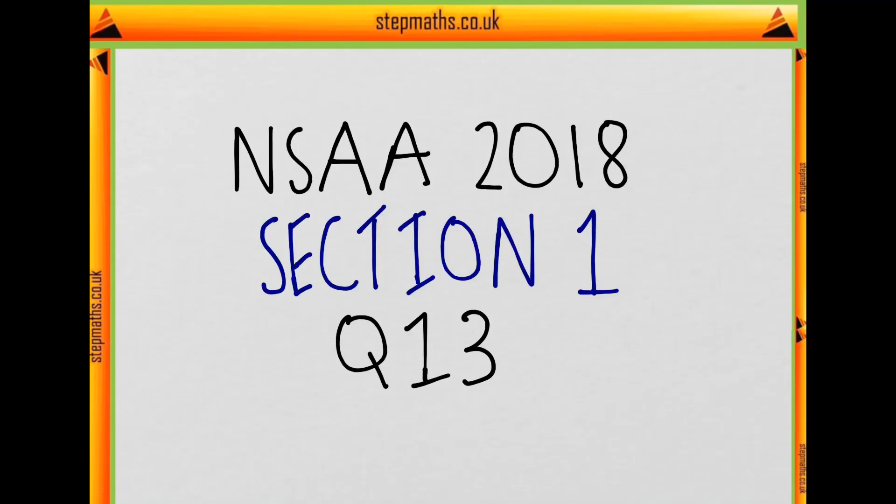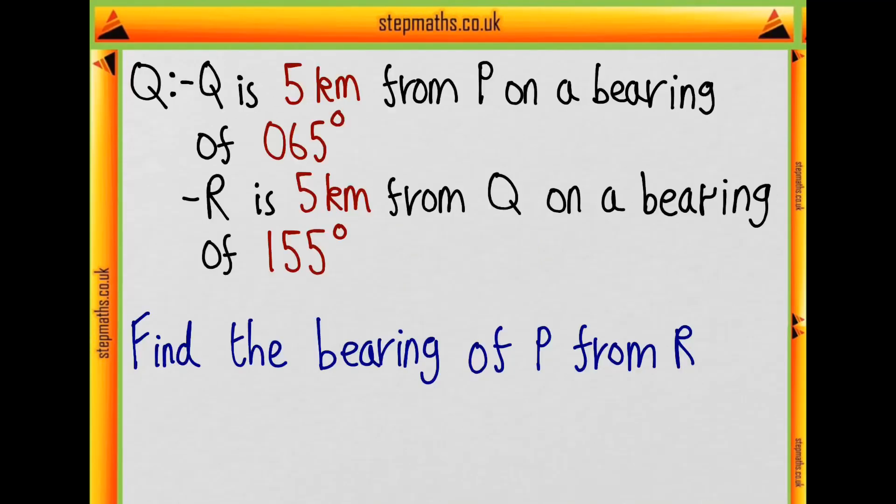This is question 13 from section 1 of the 2018 ENTER paper. In this question we're given a point Q, told it's five kilometers from P on a bearing of 65 degrees, and we're given a point R that's five kilometers from Q on a bearing of 155 degrees. We're asked to find the bearing of P from R.